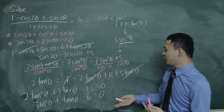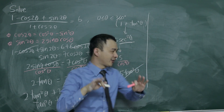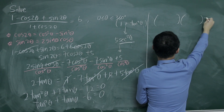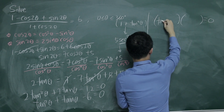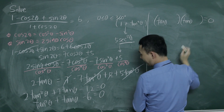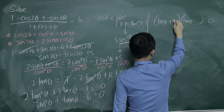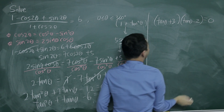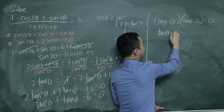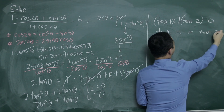The next step is to factorize. I have tan θ and tan θ as factors. Since we need negative 6 and a coefficient of positive 1 for the tan θ term, this factors as (tan θ plus 3)(tan θ minus 2) equals 0. So tan θ equals negative 3 or tan θ equals 2.